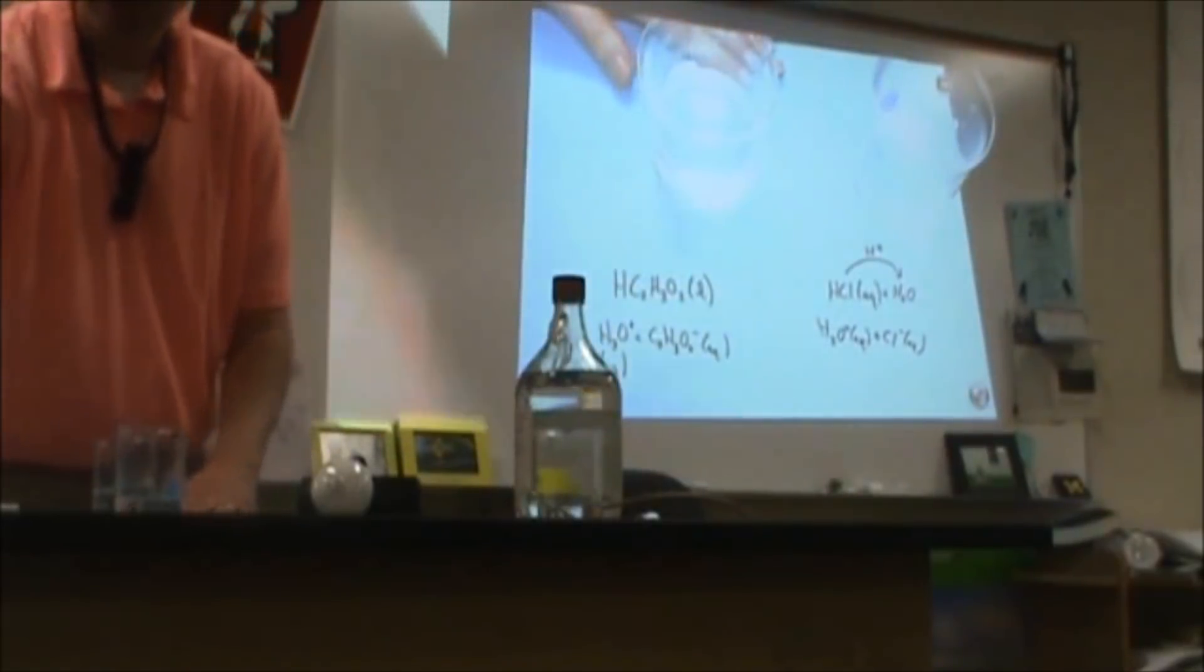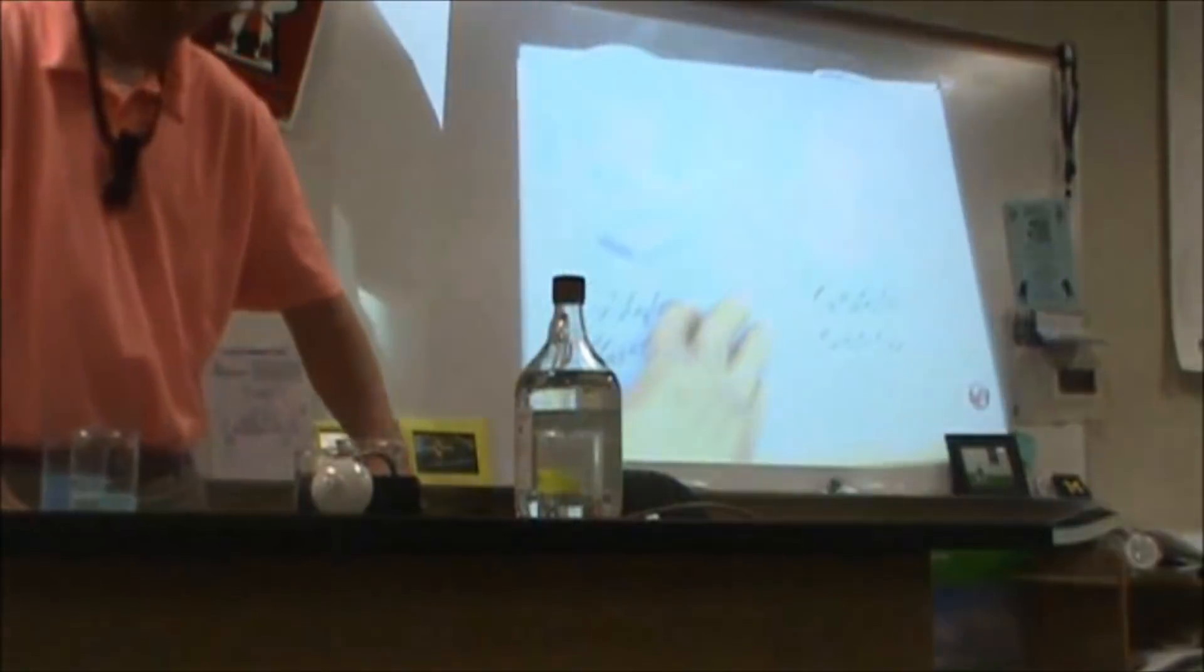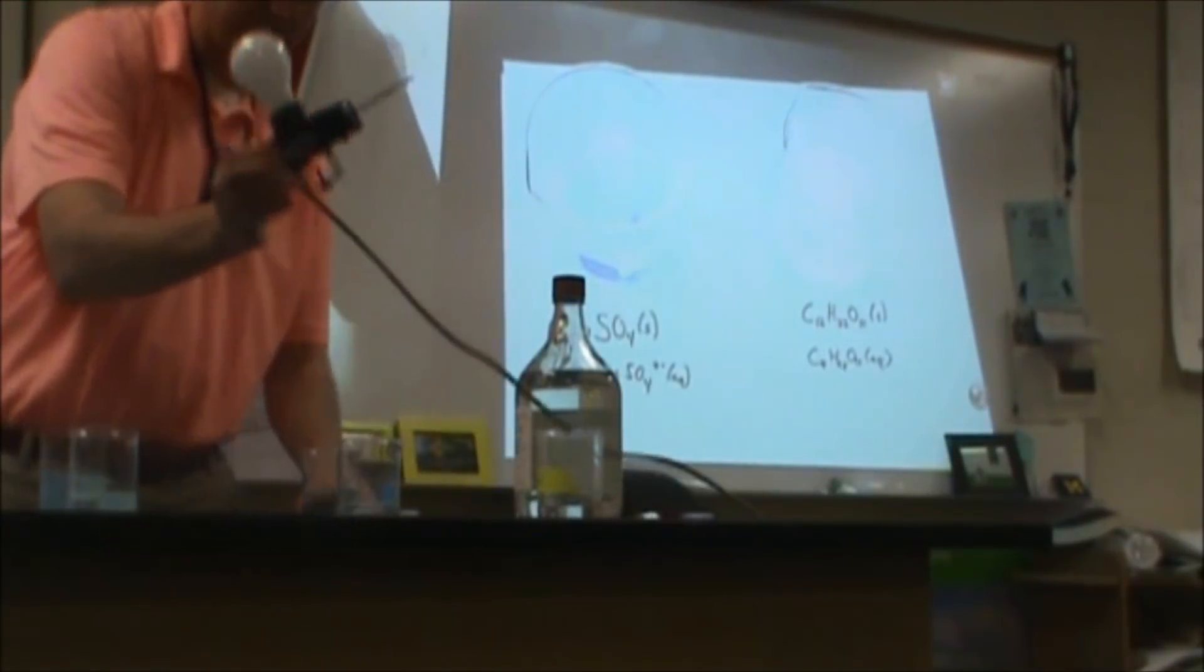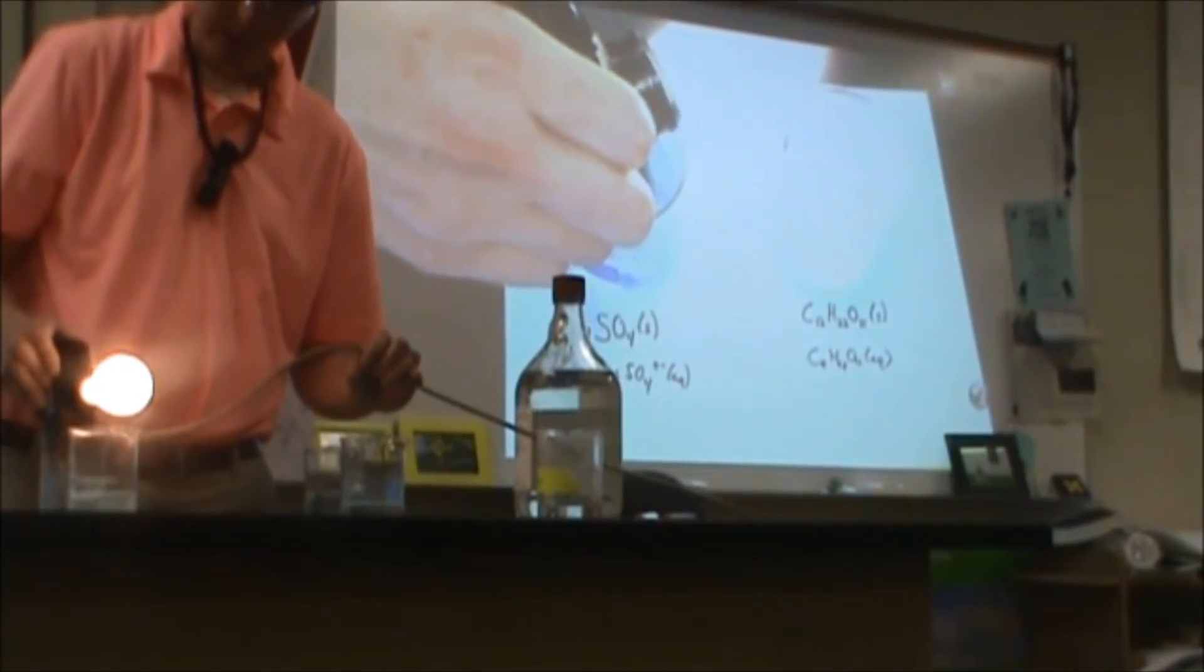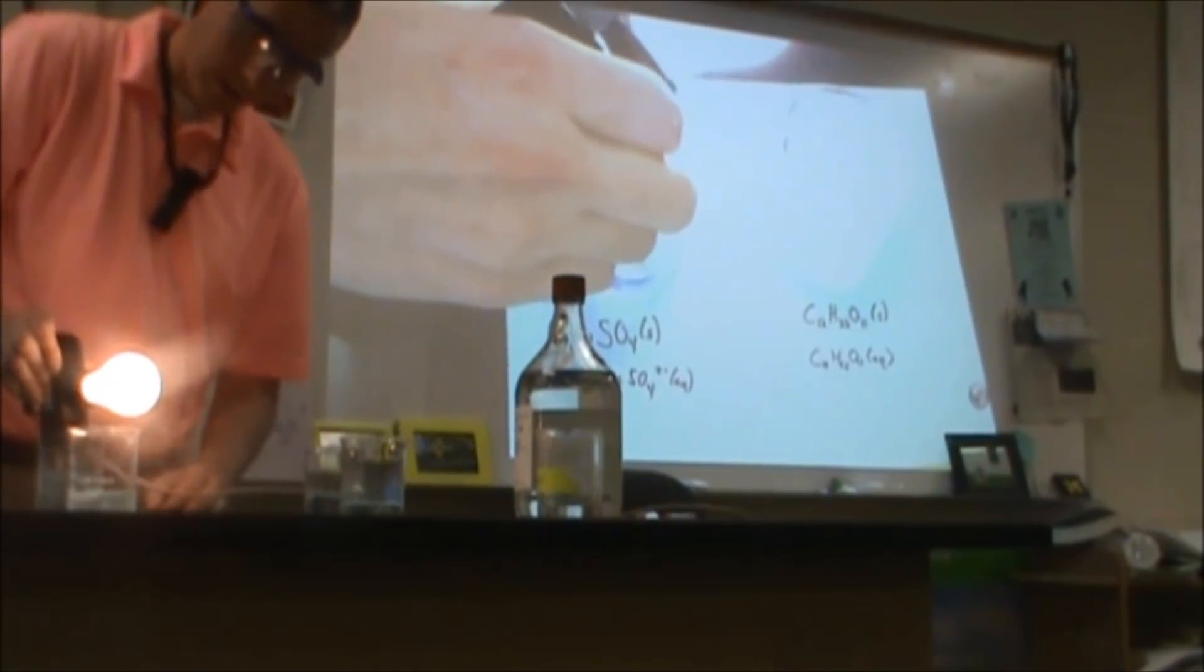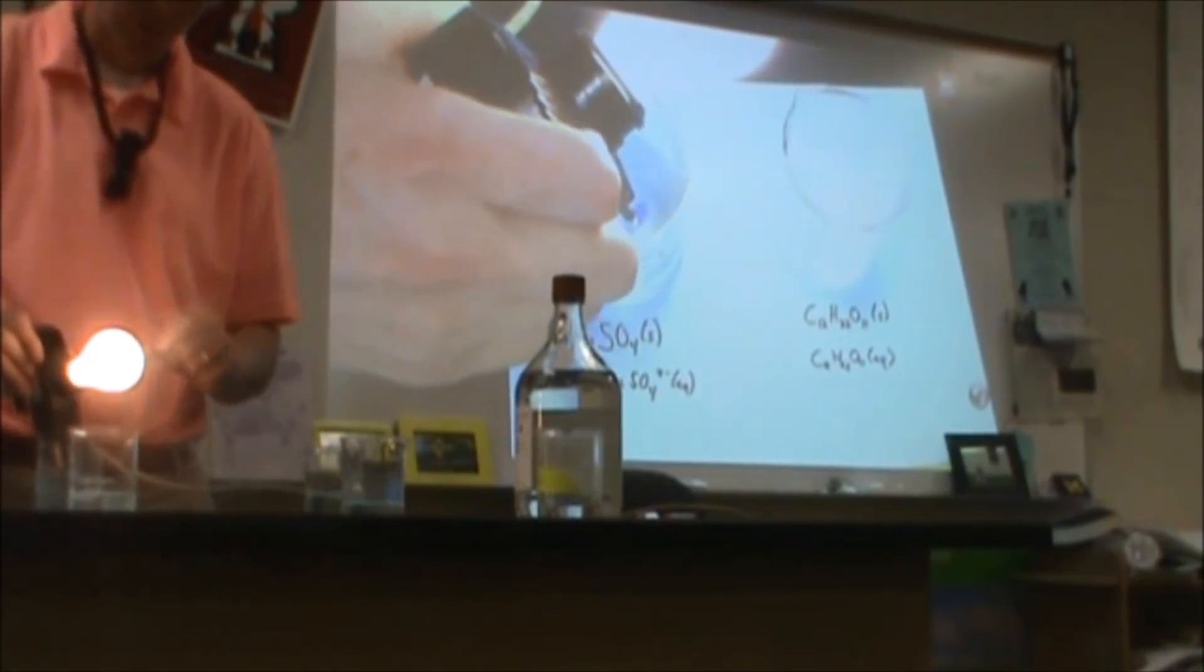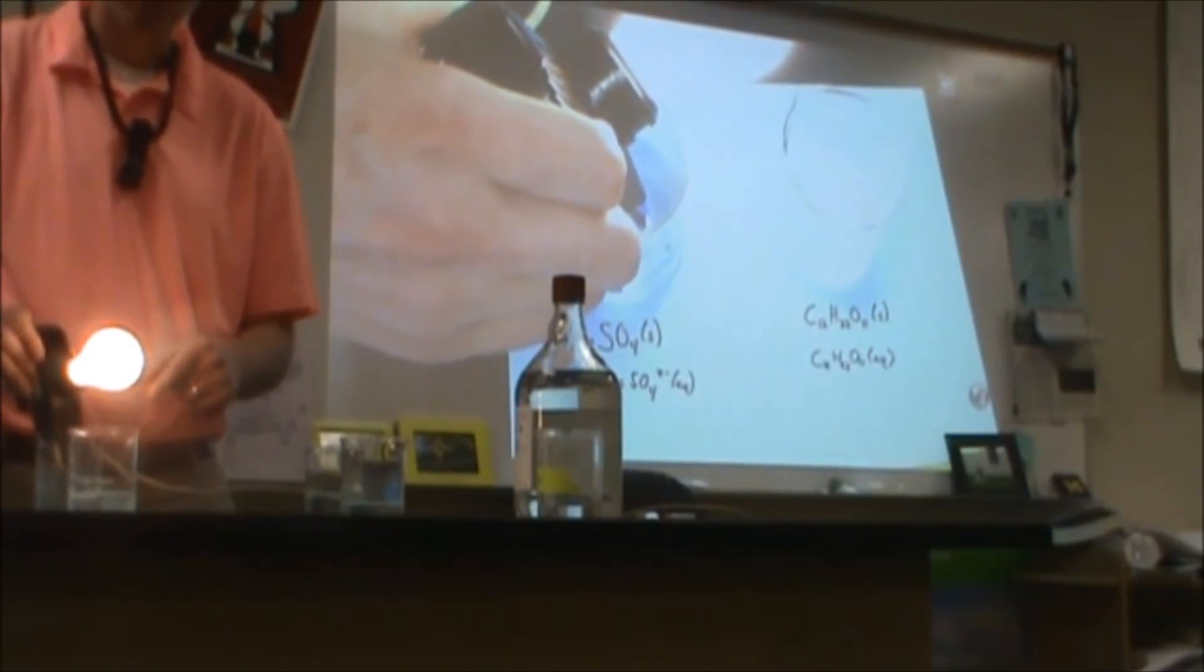If I go back to my copper sulfate from earlier, by now, hopefully, quite a bit of this has gotten a chance to dissolve. We can see that our light bulb is indeed brighter. You can see a blue color to this because more and more of that copper ion is being dissolved in the water. Therefore, we have more charged particles capable of moving, and we get a better conduction through that light bulb.